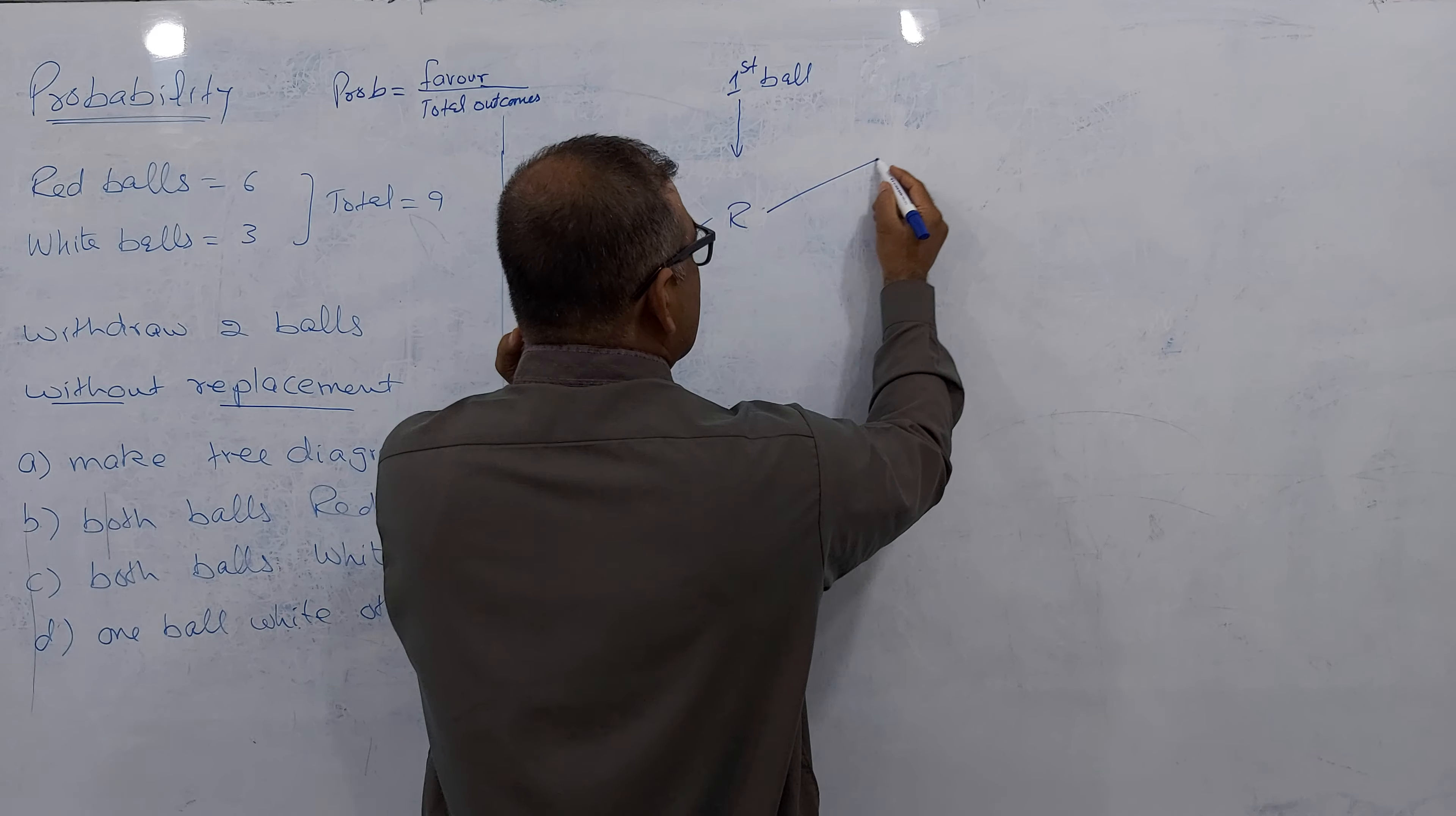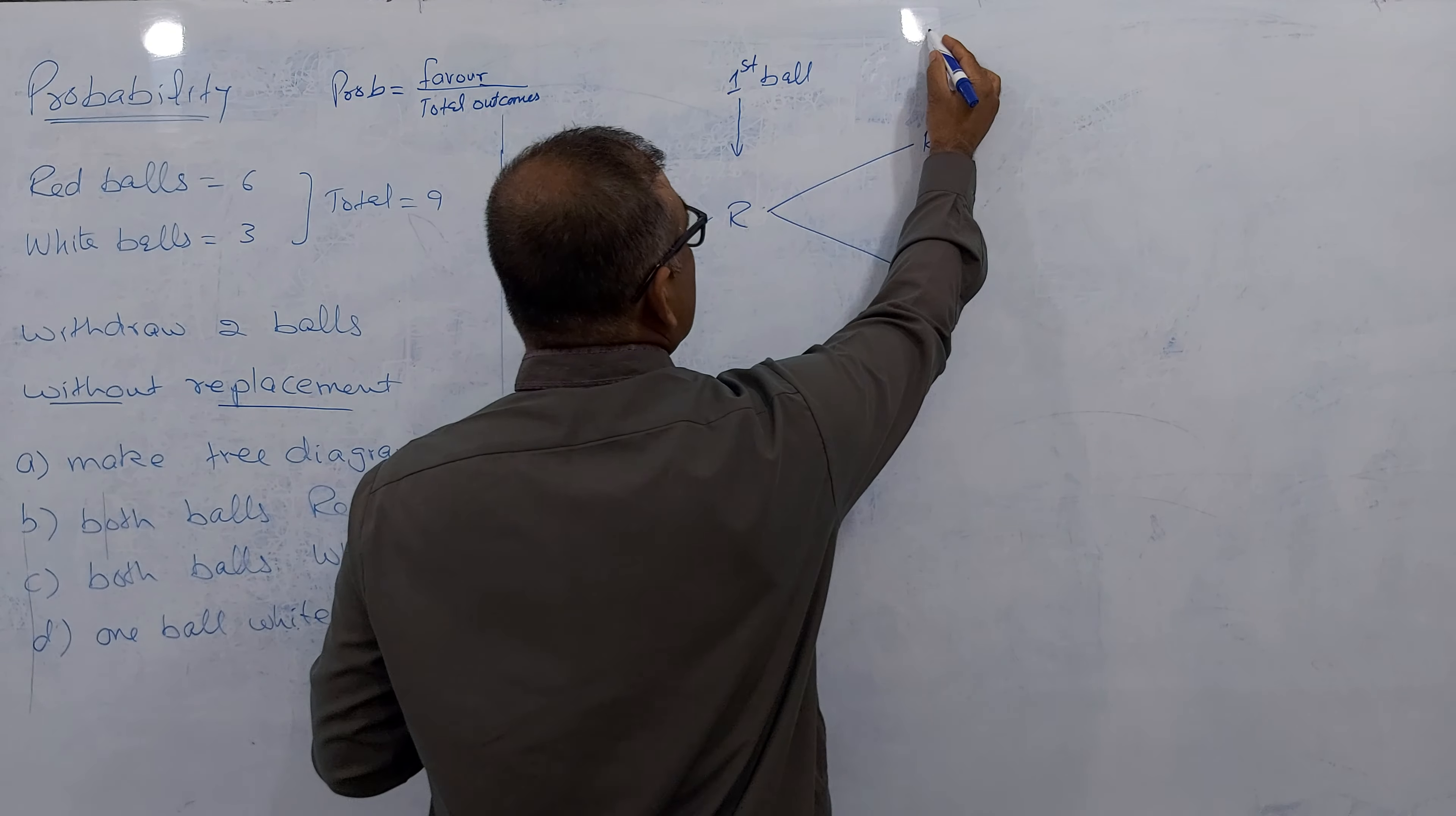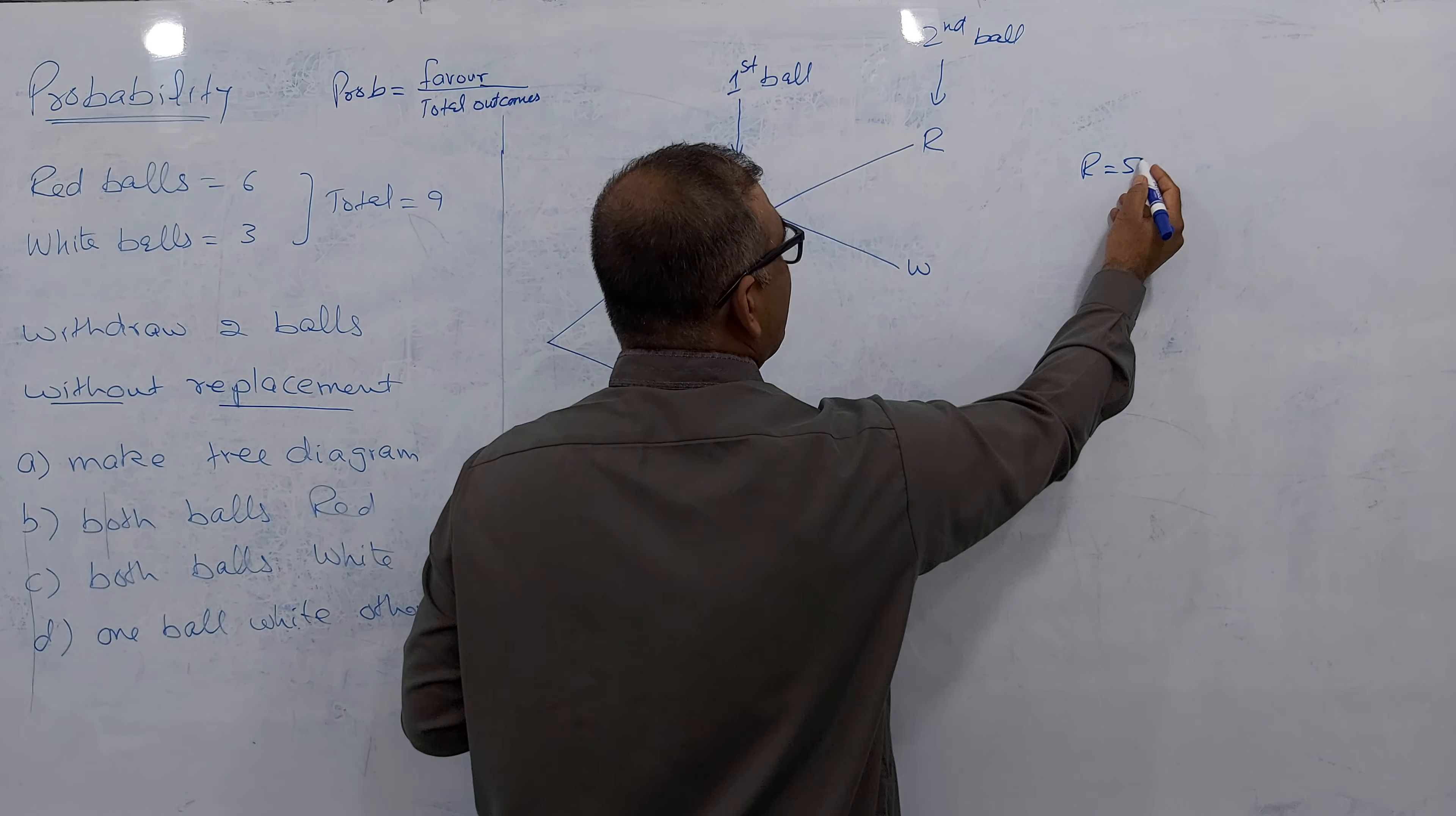Now I'll go for the second branch. Here, red and white. For a while, forget this branch. Concentrate fully here because I took the first ball red already. What is the chance of second ball? Either red. For example, you took one red ball out. Out of 6, one red ball gone. How many red balls left behind? So 5.